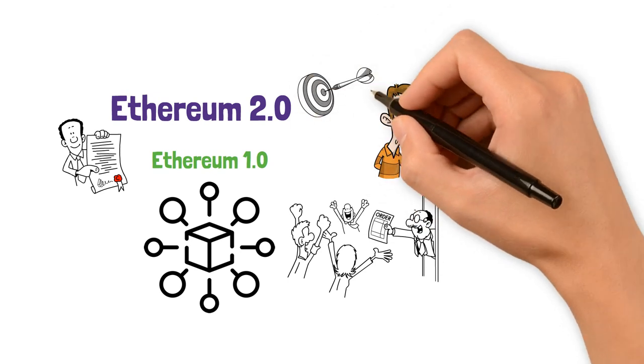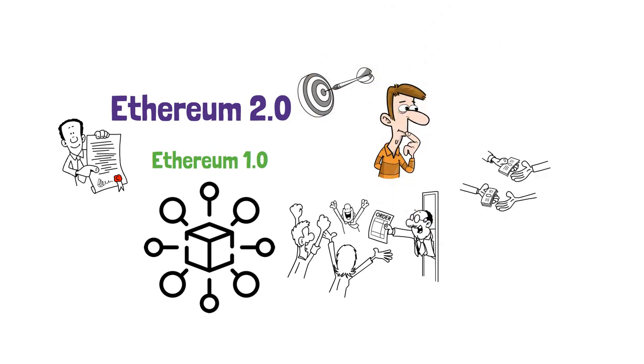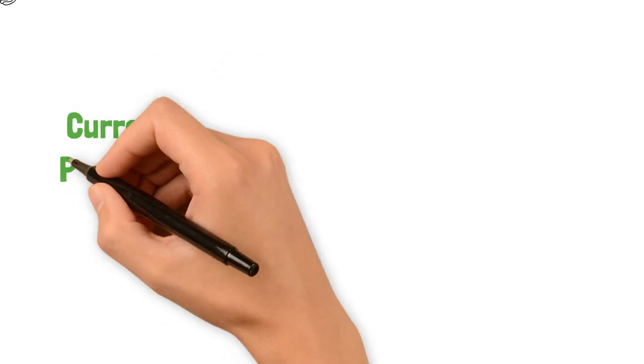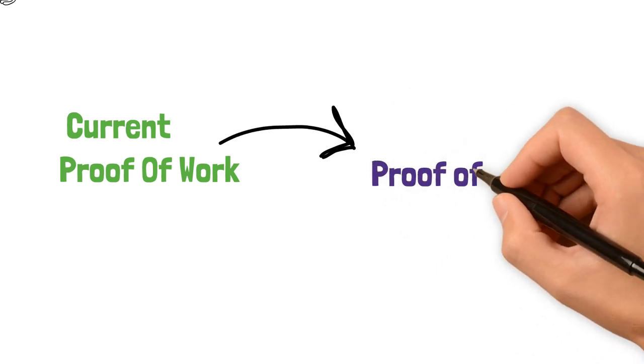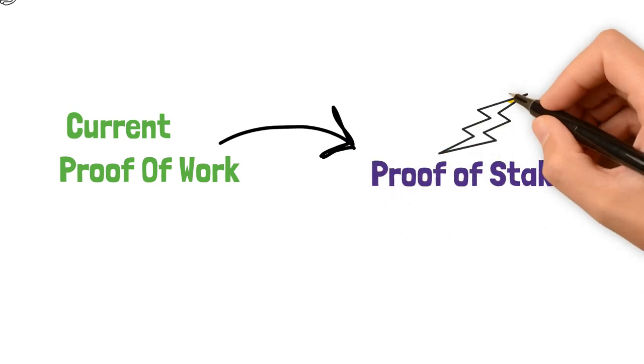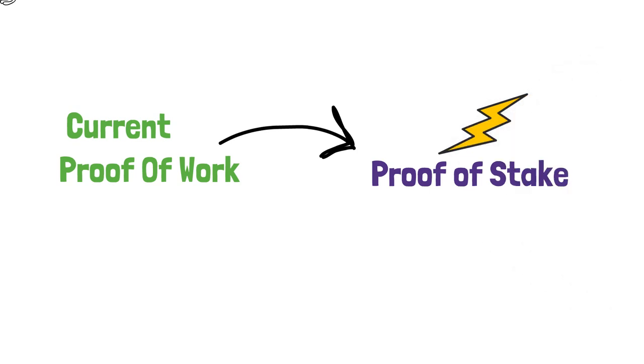Ethereum 2.0 is a major upgrade aimed at addressing these scalability issues. The primary goal of Ethereum 2.0 is to transition from the current proof-of-work consensus mechanism to a more energy-efficient and scalable proof-of-stake consensus mechanism.